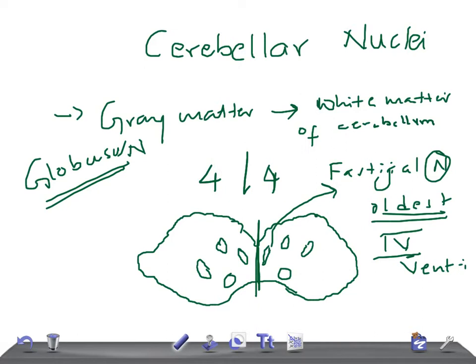Okay, then we have emboliform, emboliform nucleus. Okay, this is gonna be emboliform nucleus. And this nucleus is below the nucleus fastigius and nucleus globus.